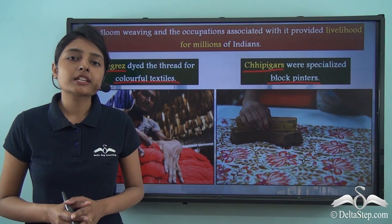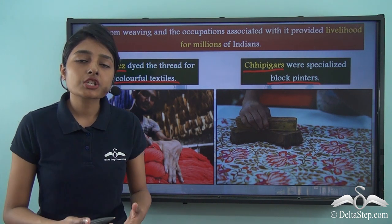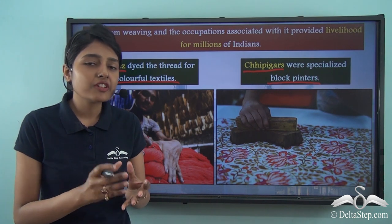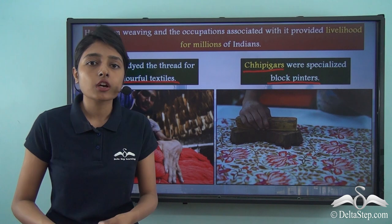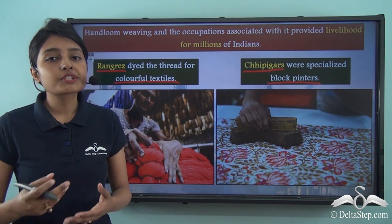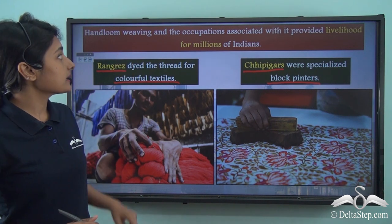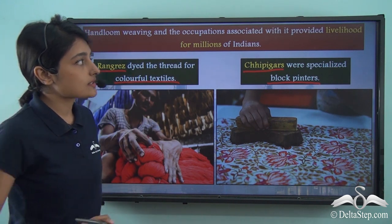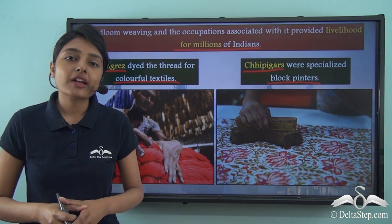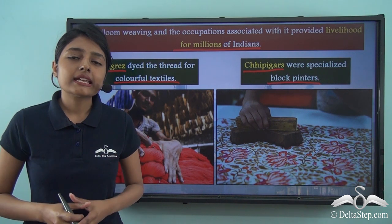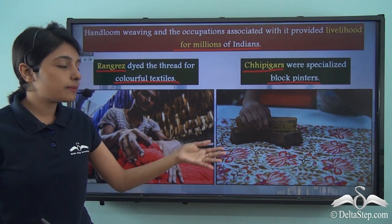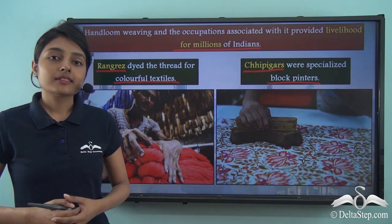A very important point is that the production of textiles requires different processes and various levels of work. It is not just weaving that is required for the production of a piece of cloth. Different kinds of activities like spinning, weaving, dyeing and printing are required to produce a beautiful piece of cloth. In this way we can understand that handloom weaving and the occupations associated with it provided livelihood for millions of Indians, because so many people depended on these activities to earn their living. While Indian textiles became prominent in several parts of the world and mostly in the European markets, these people were able to earn their living by performing these activities.